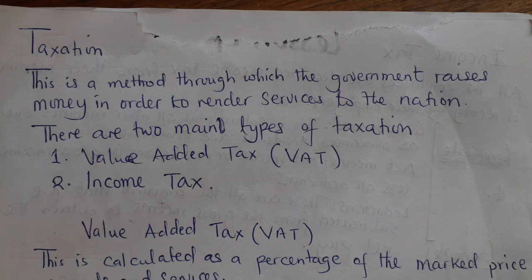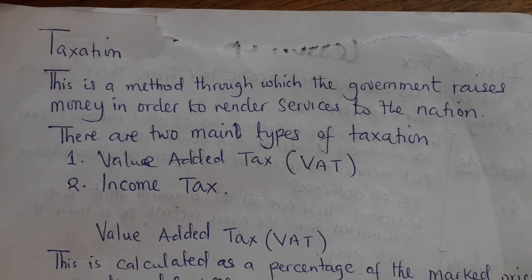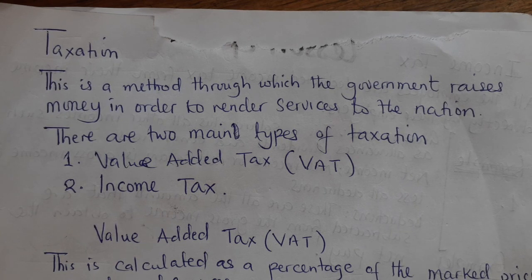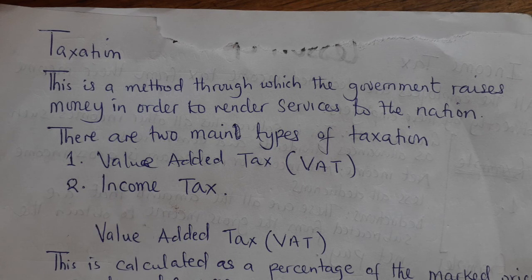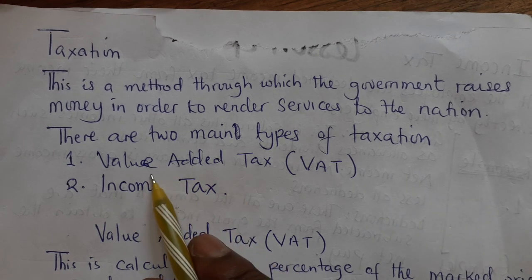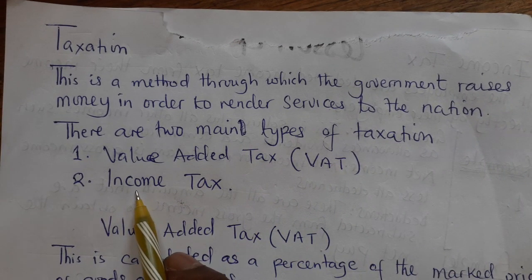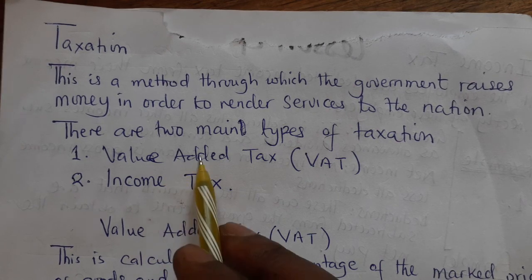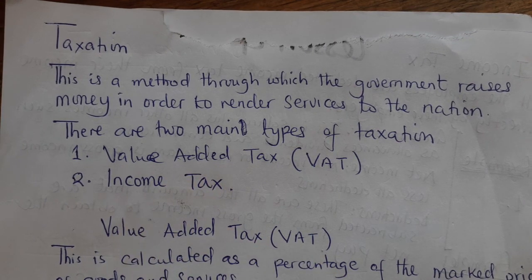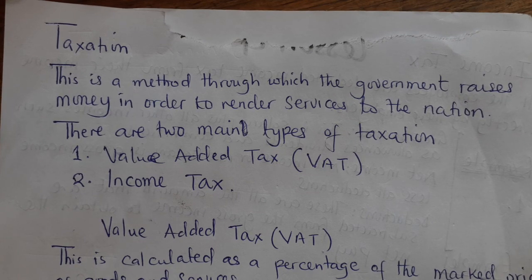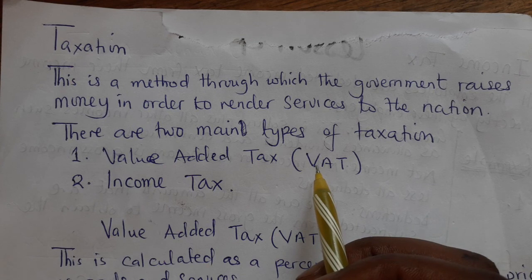We are looking at taxation as part of the topic of social and commercial arithmetic. Taxation is a method through which the government raises money in order to render a service to the nation. The government has two methods of taxation: value added tax, which we call VAT, and income tax. In this particular lesson we are going to look at value added tax.